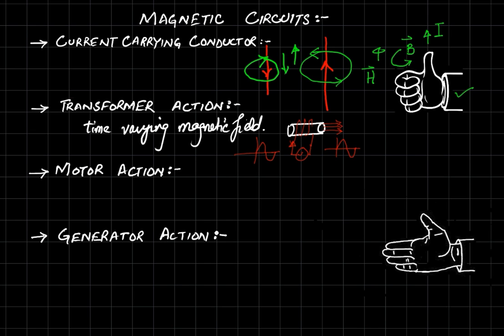If we place another coil in front of it with a wire wound on it, an EMF will be produced in the form of voltage. If we connect a resistor R, that will allow a current to pass through it, and that current will again be a function of time. This phenomenon is called transformer action.